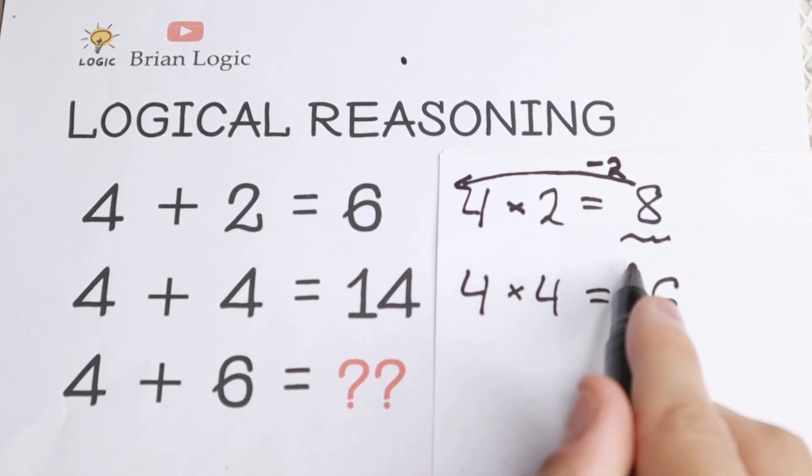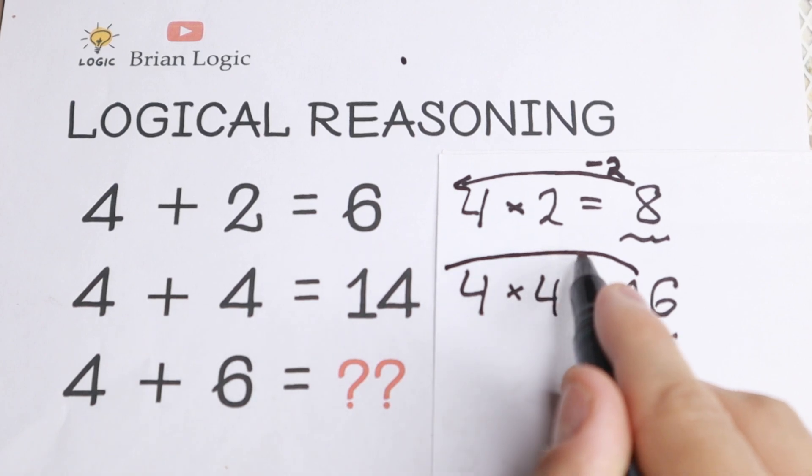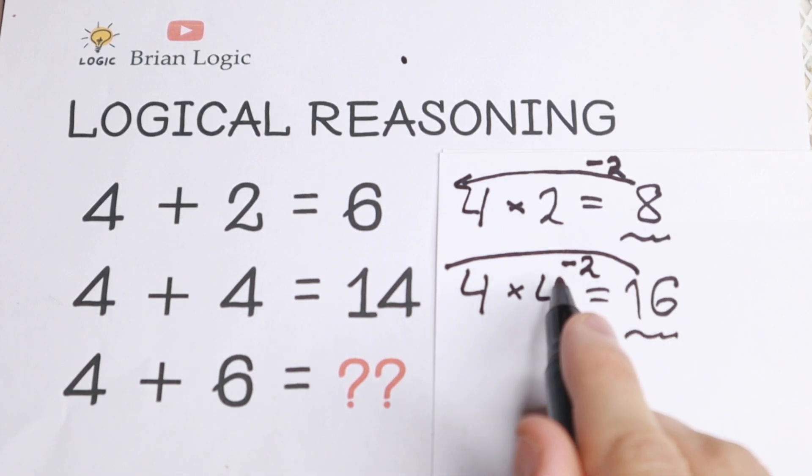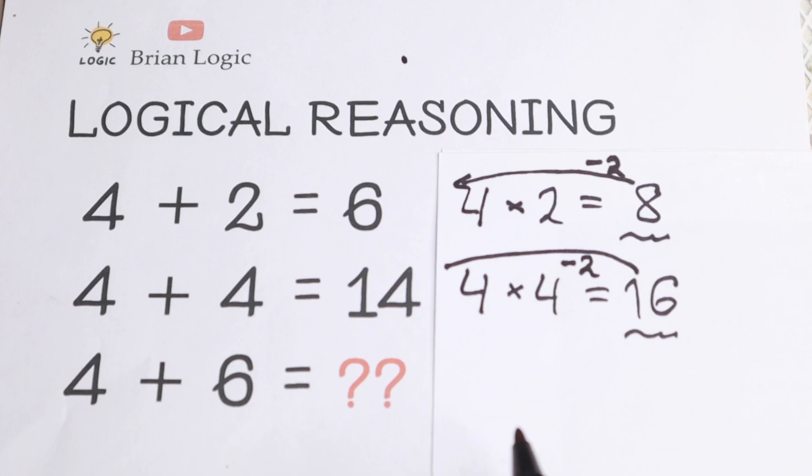And right here we have 16. How can we get 14? Of course, subtraction by 2. So as you can see if we multiply it and if we from this result if we subtract 2, we have our answer, we have our numbers.